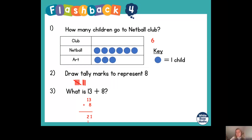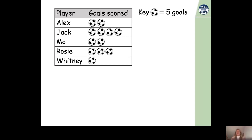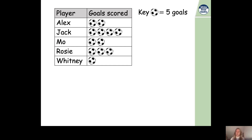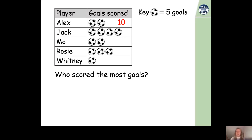Well done if you got those right. Now let's move on to today's learning. Here we have a pictogram showing how many goals each player scored. It's a good idea to work out how many goals each person scored first before answering questions. We know from the key that one football represents five goals. Alex has two footballs next to his name, so two multiplied by five equals ten — Alex scored ten goals.